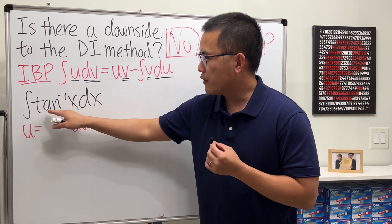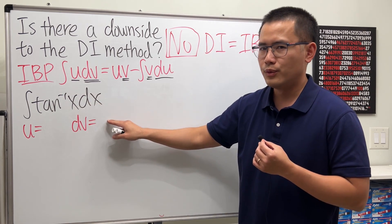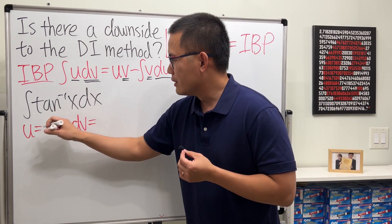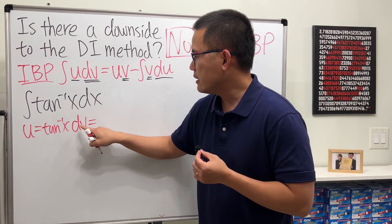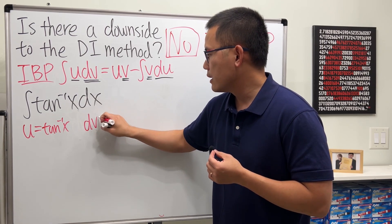Imagine, inverse tangent, we're trying to integrate that. If we put that right here, we'll have to integrate it. That's the original question, right? Okay, so we are going to differentiate inverse tangent of X. And then we are just going to be integrating DX.